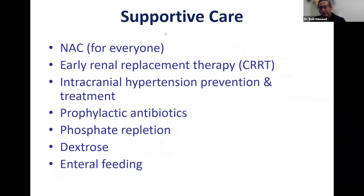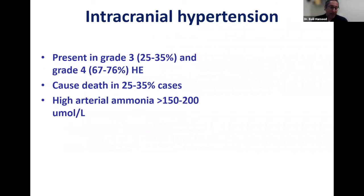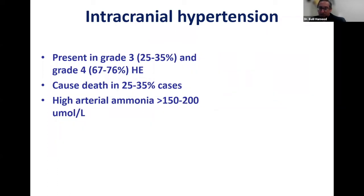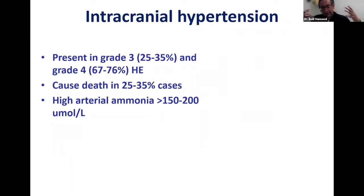For supportive care, we recommend N-acetylcysteine for everyone. One critical area is intracranial hypertension, which occurs mostly in patients with high coma grade — up to two-thirds or 75% of patients with coma grade four. This is a cause of death in about 25 to 35% of acute liver failure cases. It correlates with higher arterial ammonia levels — ammonia causes astrocytes to swell, leading to cerebral edema and herniation.